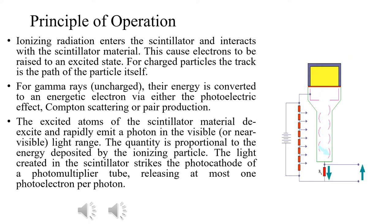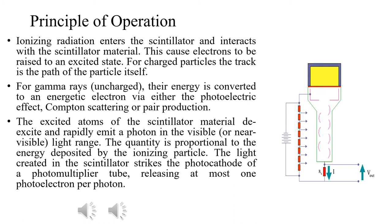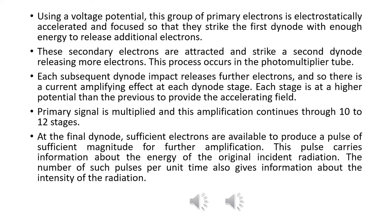That light reaches the photocathode of the photomultiplier tube. The photocathode generates photoelectrons when struck by the light. When you generate photoelectrons with sufficient energy, photoamplification is produced.